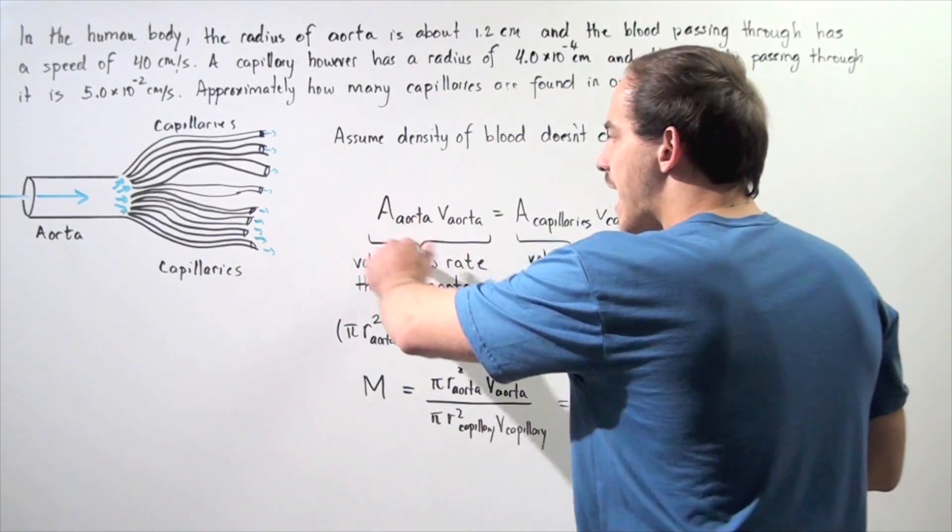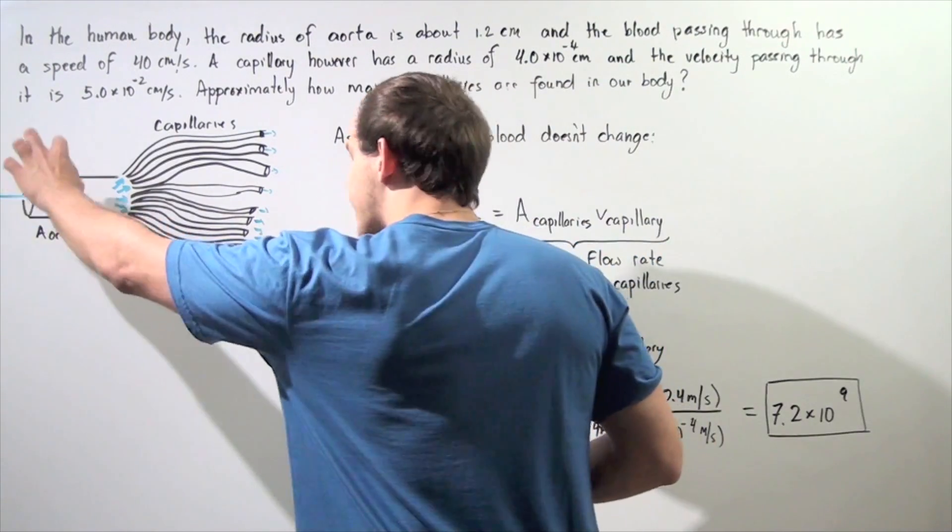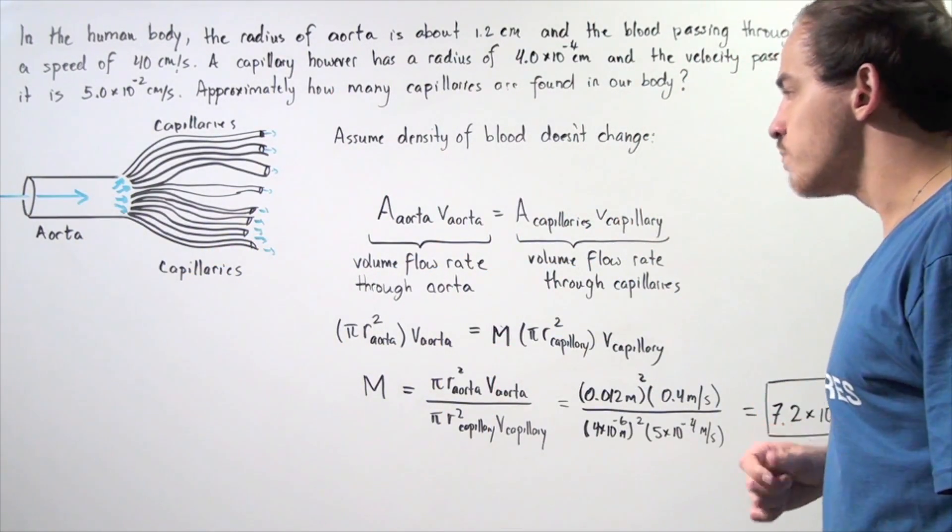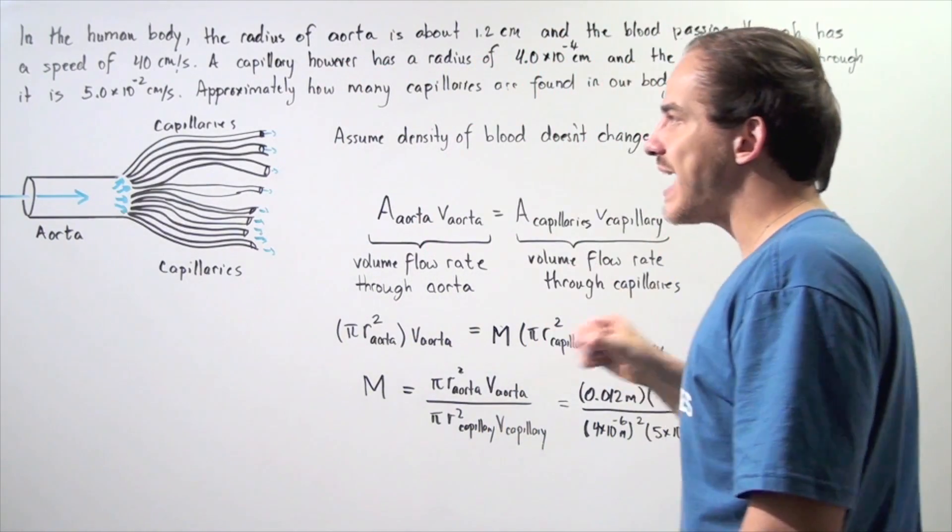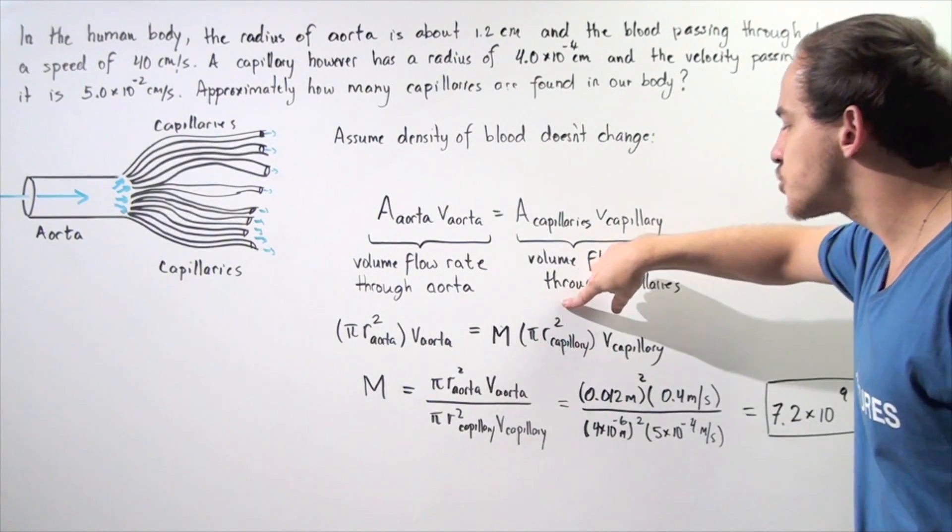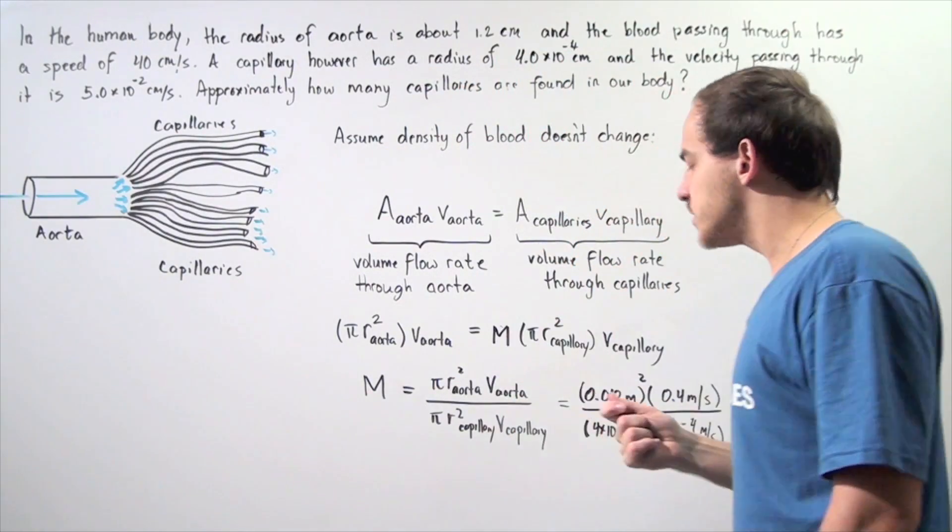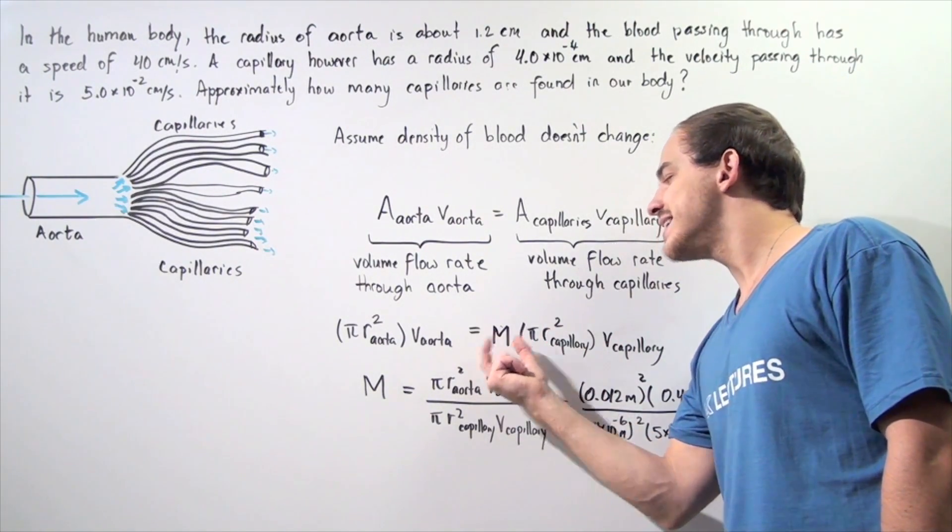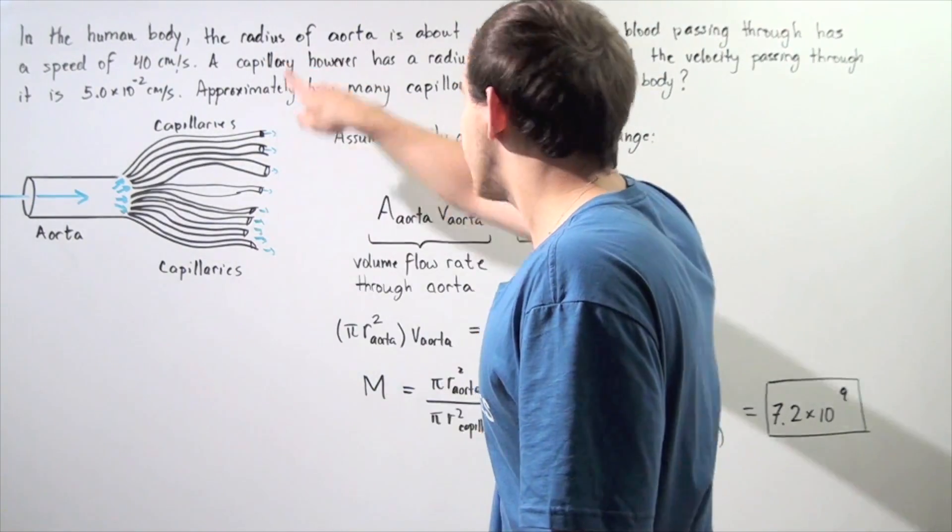Notice how the cross-sectional area of our aorta is simply, because we have one aorta, π r_aorta² multiplied by the velocity of blood through this blood vessel. And that is equal to, now we're dealing with many different capillaries. Because every single capillary has the same exact cross-sectional area, the cross-sectional area of a single capillary is π r_capillary². Because we have some unknown number of capillaries to find the total cross-sectional area, I have to multiply this single cross-sectional area by the number of capillaries. Let's say the number of capillaries is given by capital letter M. I multiply this by M, and this gives me the total cross-sectional area of all the capillaries combined.